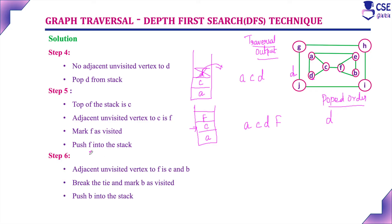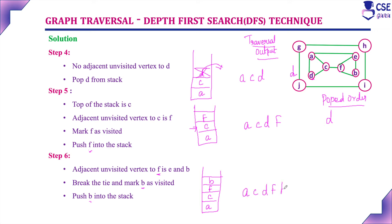Step 6: Currently visited vertex is F. Adjacent unvisited vertices to F are E and B — both unvisited. Break the tie and visit B first, then push B into the stack. Already in the stack are A, C, and F. Now push B. Traversal output is A, C, D, F, B. Popped order is still D only.